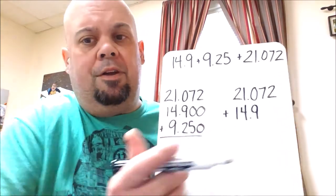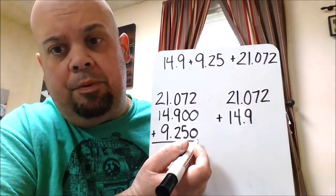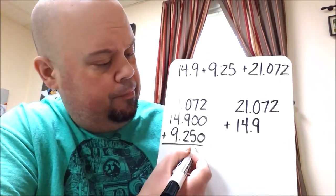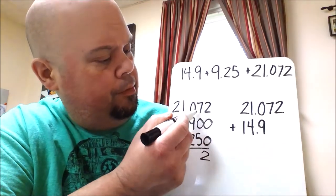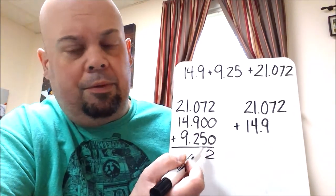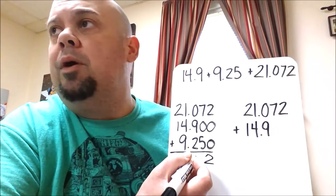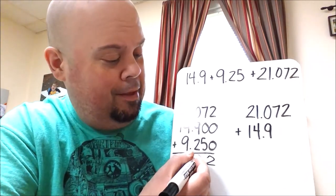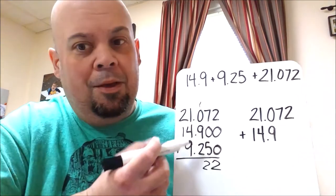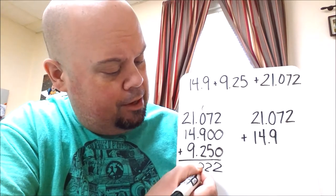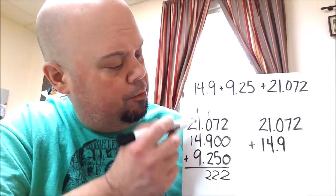So now you can start adding by beginning in the lowest place value which is our thousandths. 2 plus 0 plus 0 is 2. 7 plus 0 is 7 plus 5 is 12. Right? So you put down your 2. Carry your 1. 1 plus 9 is 10. Plus 2 is 12. Put down your 2. Regroup your 1.